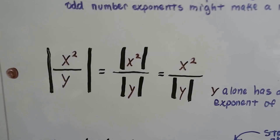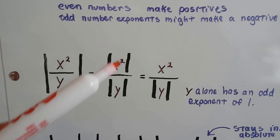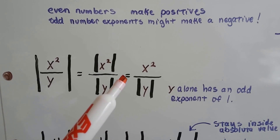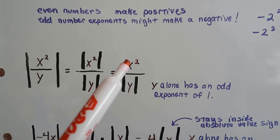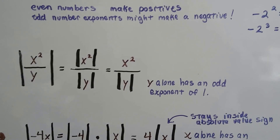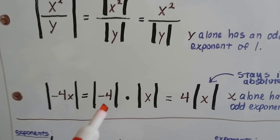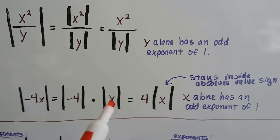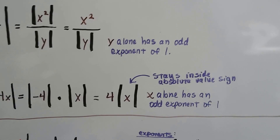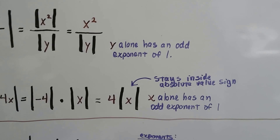Now look at the absolute value of x squared divided by y. We put them both into their own absolute value bars: absolute value of x squared over the absolute value of y. When we simplify, because x squared has an even exponent, we can remove those absolute value signs, but the y — which has an exponent of 1 — has to stay inside the absolute value bars. Next, the absolute value of negative 4x: we open it as the absolute value of negative 4 times the absolute value of x. The 4 comes out, but x has an odd exponent of 1, so it stays inside the absolute value signs.